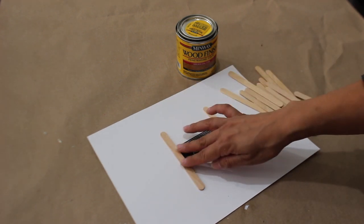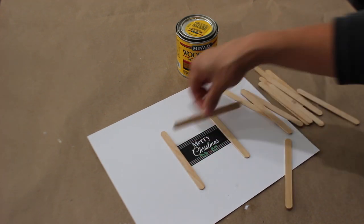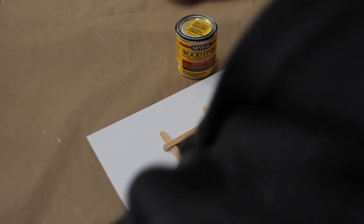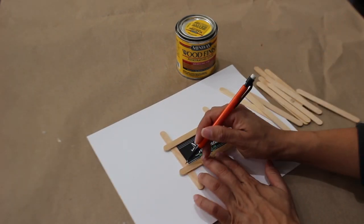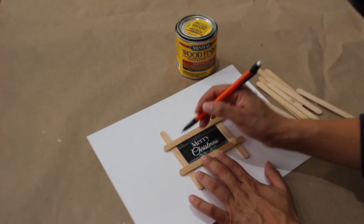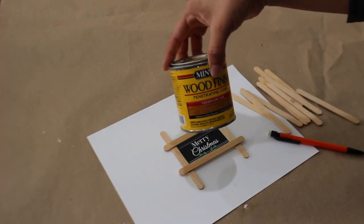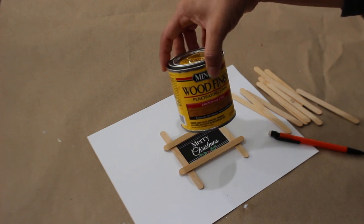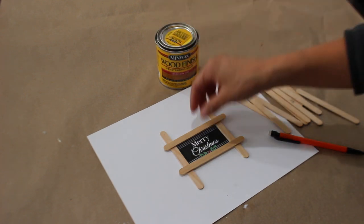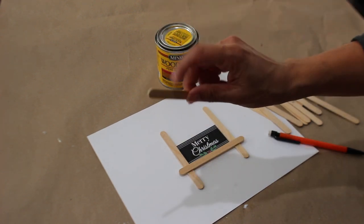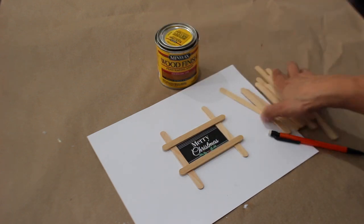I'm going to mark it off with my pencil that way I can see where to cut. I'm going to stain it with this Golden Oak 210B. You don't have to do this, or you can use paint to paint the frame, or you can just leave it like that. It's up to you.